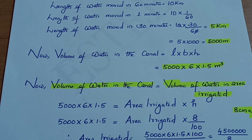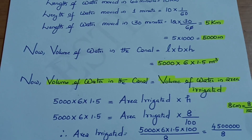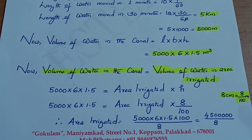This volume of water equals the volume of water spread over the irrigated field: 5,000 × 6 × 1.5 = area irrigated × height. The irrigated field is a rectangle, so area = length × breadth. The standing water height is 8 cm = 8/100 meters.